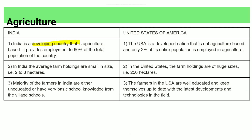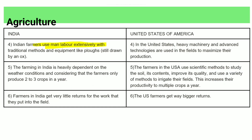The US is a developed country. In India, 60% of total employment is dependent on agriculture, whereas in the US only 2% of the population is dependent on it. Indian farms are small-sized while US farms are huge. The majority of farmers in India are uneducated, while US farmers are educated. Indian farming relies heavily on manual labour and weather conditions. If scientific methods are improved, farmers can get better returns. Hope this video was useful — thank you.